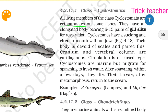The body has an elongated form with a circular mouth. Scales and paired fins are present. The cranium and vertebral column are present. The circulatory system is of the closed type.